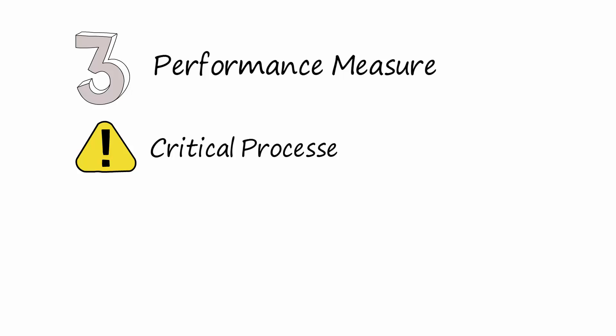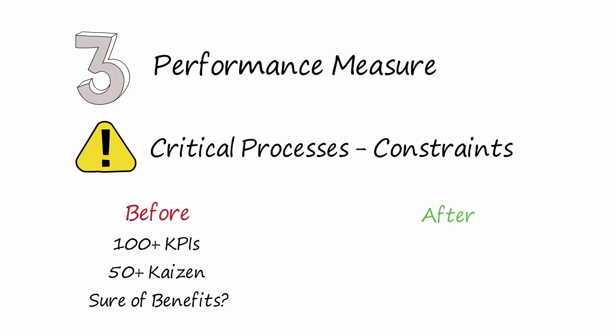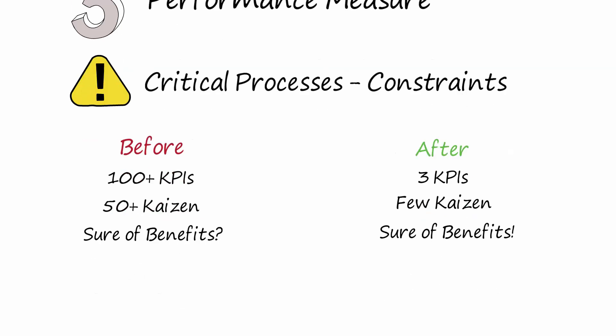These critical processes are identified as constraints. By adopting the theory of constraints, instead of measuring dozens of KPIs and launching many improvement initiatives, you will be able to measure only three KPIs and launch a few targeted initiatives that will have a real benefit on your business. Let's go into the detail.